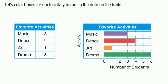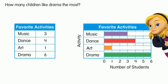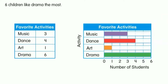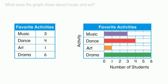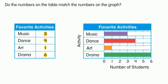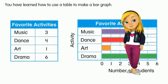Let's color boxes for each activity to match the data on the table. How many children like drama the most? Six children like drama the most. The graph shows that three children like music and one child likes art. Do the numbers on the table match the numbers on the graph? Yes, the numbers on the table and graph do match. You have learned how to use a table to make a bar graph.